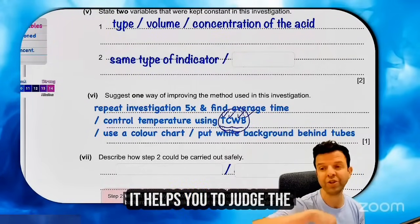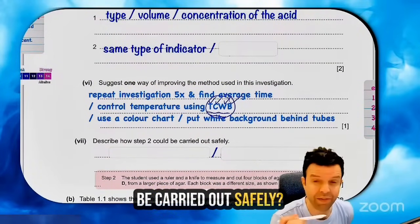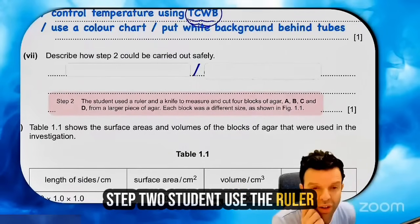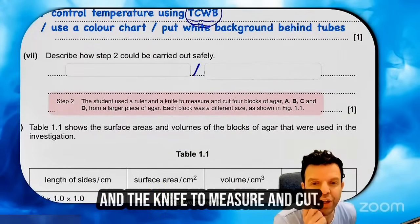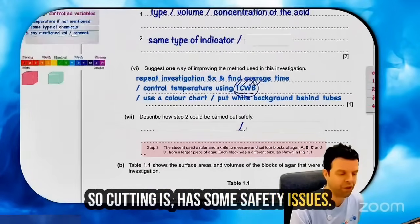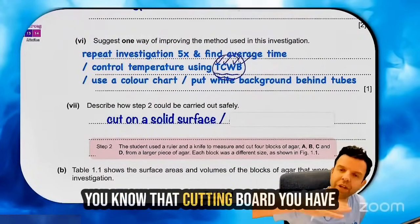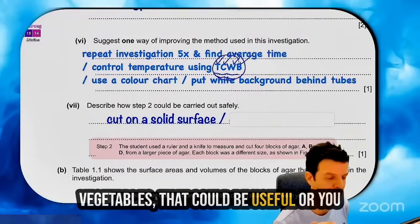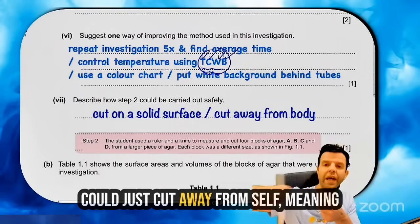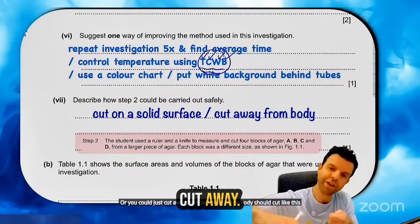How could step two be carried out safely? Step two is about students using a ruler and knife to measure and cut. So cutting has some safety issues. You could use a cutting board — you know, like the one you have in your kitchen where you cut vegetables. Or you could just cut away from yourself — nobody should cut towards themselves.